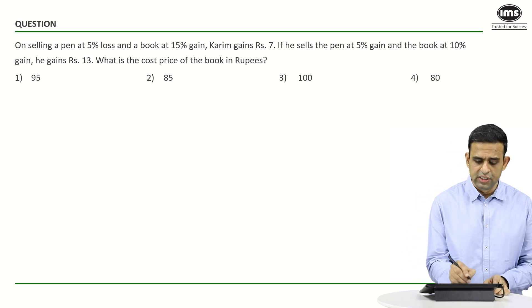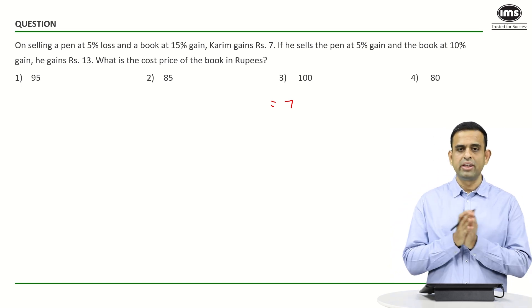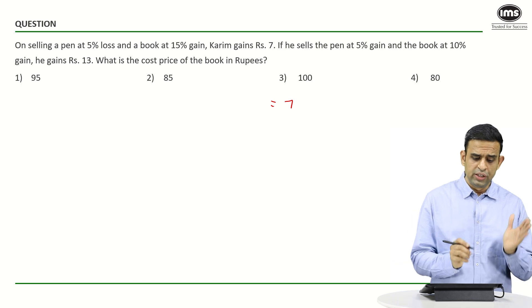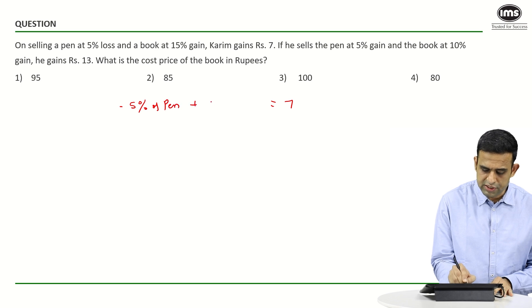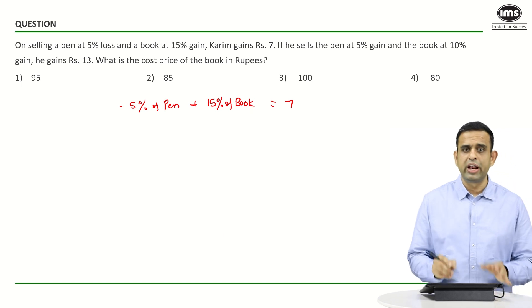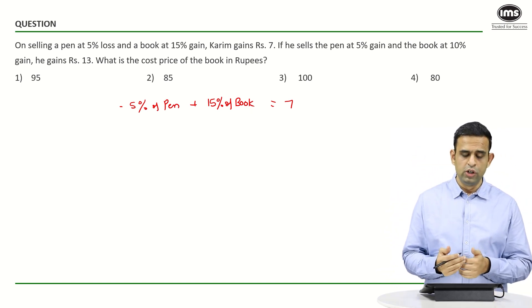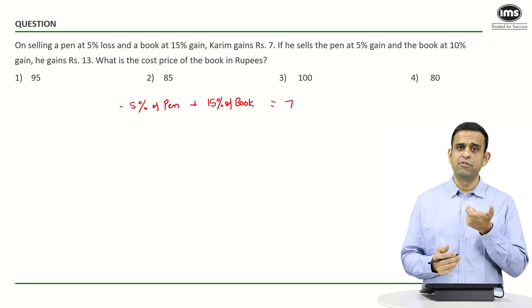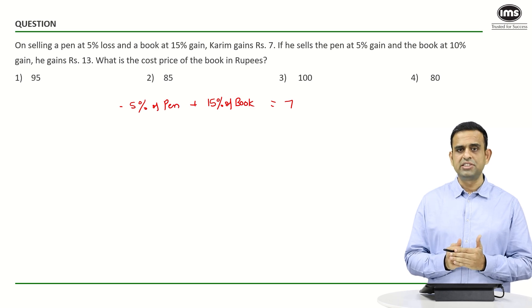As per the first statement, can we say that 7 rupees is nothing but the overall gain which has to be the loss on pen and the gain on the book. So it has to be equal to -5% of pen plus 15% of book. If I assume that pen represents the cost price of pen and book represents the cost price of the book, so my loss on the pen will be 5% of pen and the gain on the book will be 15% of book.